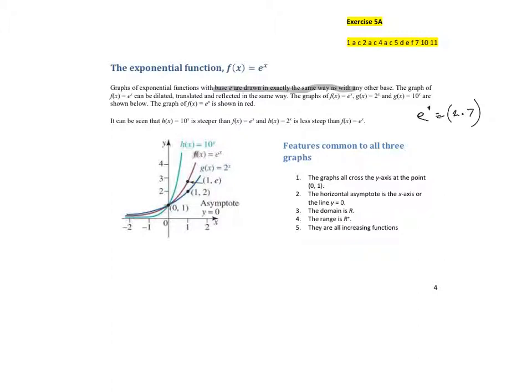So you have a look at the graph here, there's e to the x. Again, it goes through (0,1), approaches the x-axis as an asymptote, and increases steadily as x gets bigger. So it has exactly the same properties as any base function: 2 to the x, 3 to the x, 10 to the x.